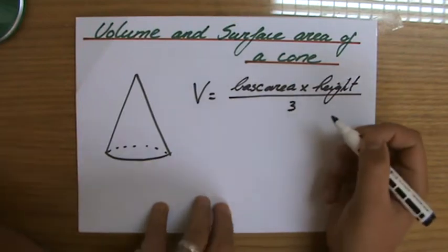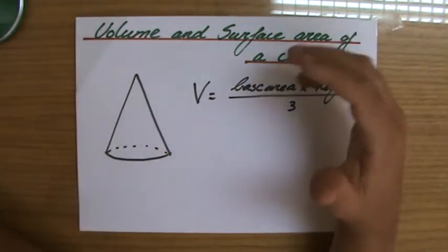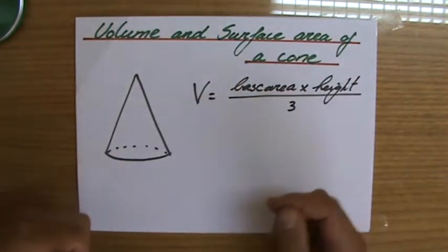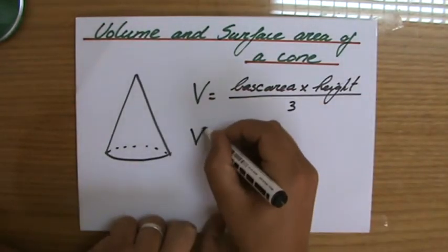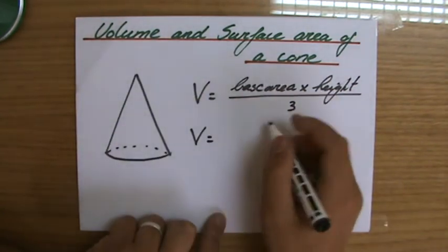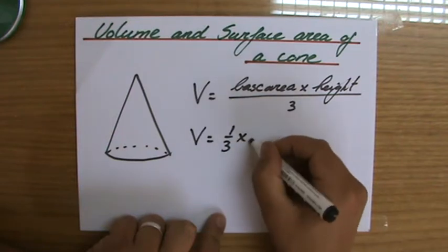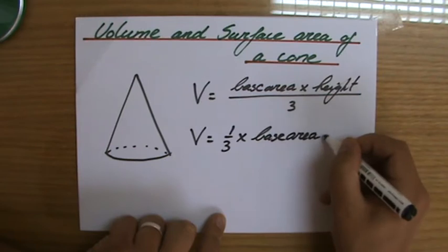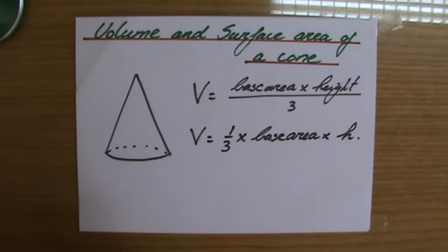And the same thing for a cone, because in one of my different videos I show you that that relates to the cylinder around the cone. It will fit in three times into the cylinder, but I showed it in a different video. So also the volume of a cone, like the volume of a pyramid, is a third times base area times the height. And that formula will be given to you.